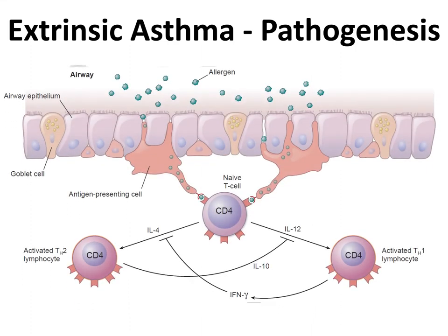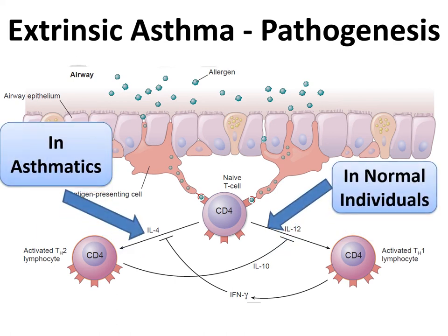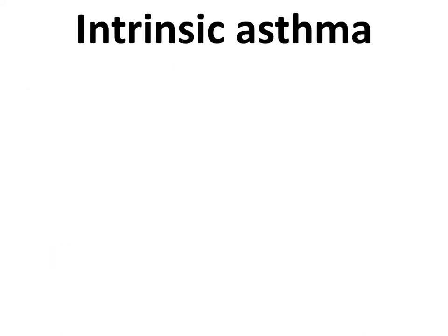The picture shows how the allergen interacts with immune cells and the effect of these mediators on the airway epithelial cells. In normal individuals versus asthmatic individuals, interleukin-4 activates Th2 T cells and further steps take place in the cascade.